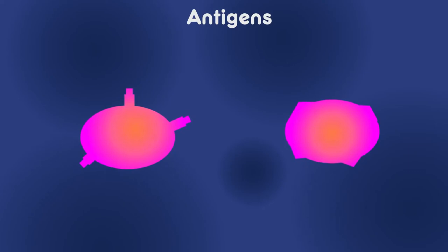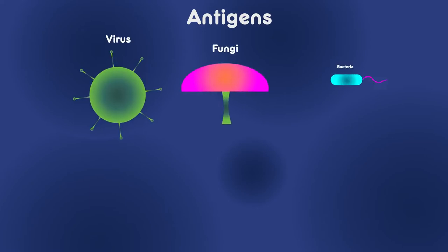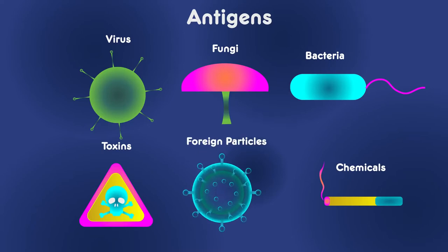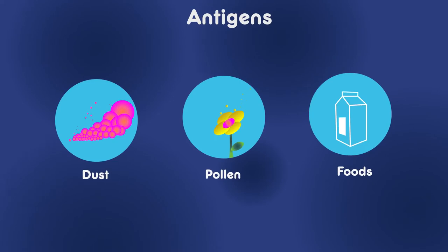Antigens are foreign substances that are capable of triggering an immune response. They can be viruses, fungi, bacteria, and some non-living substances such as toxins, chemicals, and foreign particles. They can even be allergens like dust, pollen, or certain foods that cause allergic reactions.